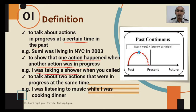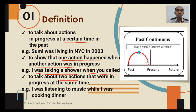For example: I was taking a shower when you called. This shows one action happened and another action was in progress. The third definition is to talk about two actions that were in progress at the same time. For example: I was listening to the music while I was cooking dinner. Here we use 'while' and 'when' for the second definition.